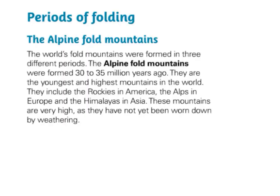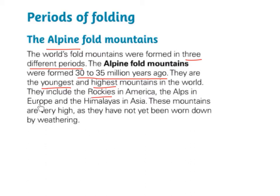There are three periods of folding we are going to look at. The first is the Alpine fold mountains. The world's fold mountains were formed in three different periods. The Alpine fold mountains were formed 30 to 35 million years ago. They are the youngest and highest mountains in the world, as they haven't been worn down by weathering very much. They include the Rockies in America, the Alps in Europe, and the Himalayas in Asia.